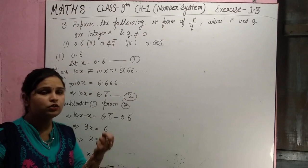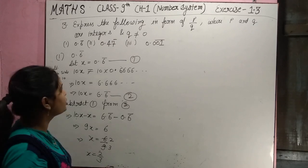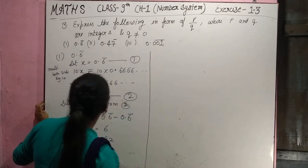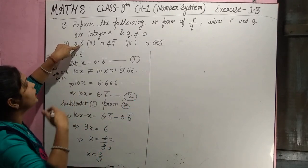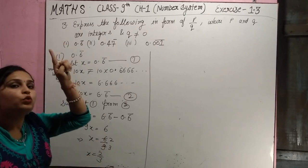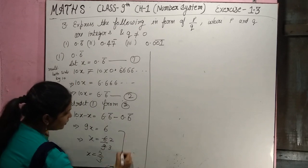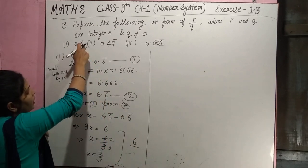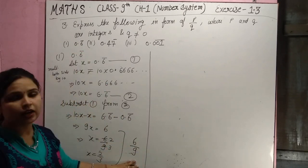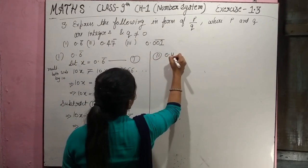I will also show you a short method. For 0.6 bar, there is one digit under the bar, so we write that digit (6) in the numerator and put the same number of 9s in the denominator (one 9), giving us 6/9 = 2/3.